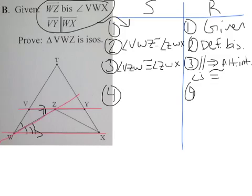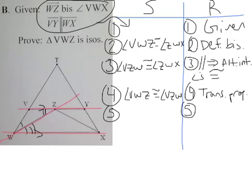So, next thing I have, transitive property. Angle VWZ is congruent to angle VZW. Trans prop. Well, those guys are congruent. Then, I know my legs are congruent. So, VW congruent to VZ. And, that's if angles, then sides.